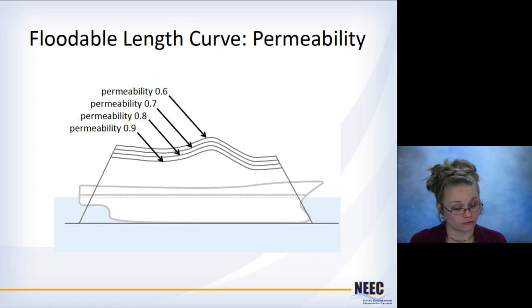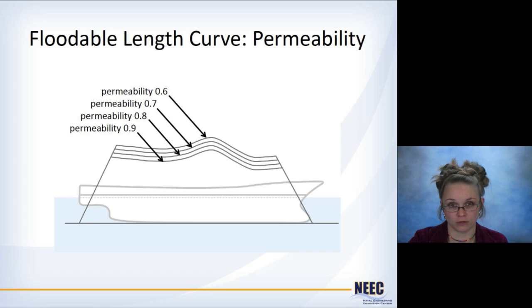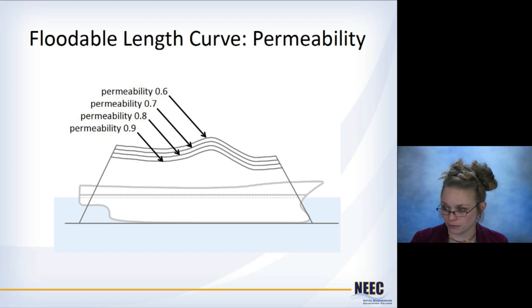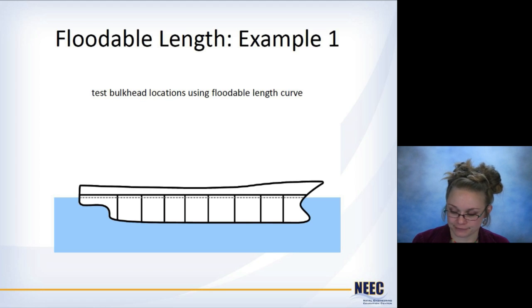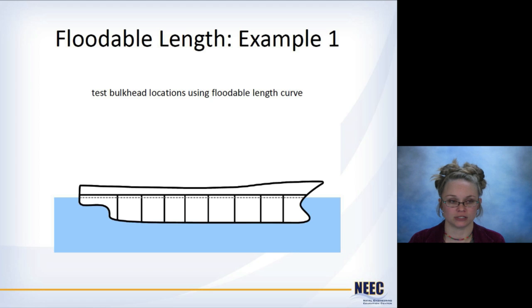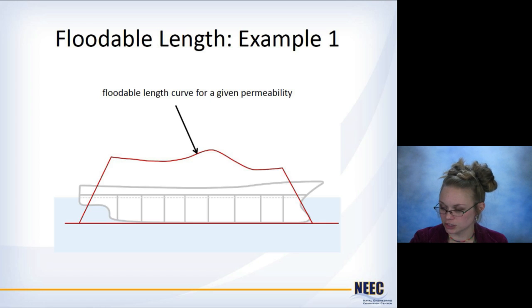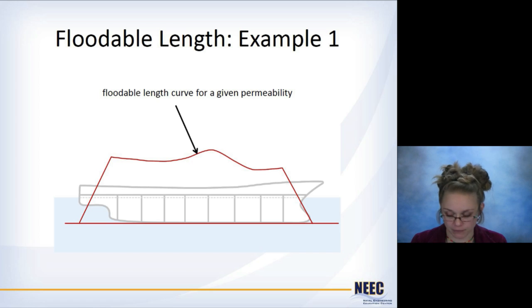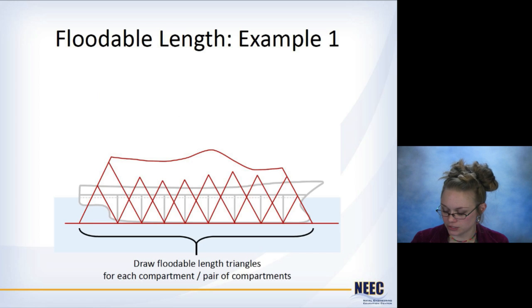You can calculate the floodable length for different permeabilities — either using one permeability value across the whole ship length, or doing it piecemeal if you know different spaces have permeabilities of 0.9, 0.8, or 0.7. So what is the point of all this? You can use the floodable length to test your bulkhead locations. You take a ship with chosen bulkhead locations and evaluate whether they're sufficient to contain flooding. You overlay the floodable length curve — which represents the allowable flooding before the ship sinks for a given permeability — and draw the floodable length triangles for each compartment.